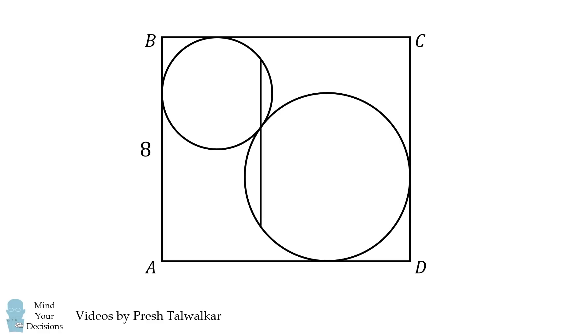We will then construct EF that goes through the tangent point between the two circles. Suppose EF is parallel to side AB and EF is equal to 6. The question is what is the length BC equal to?